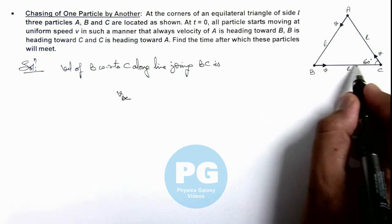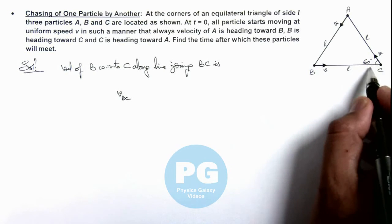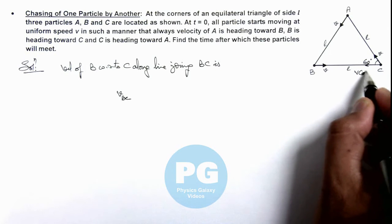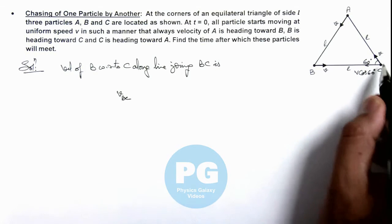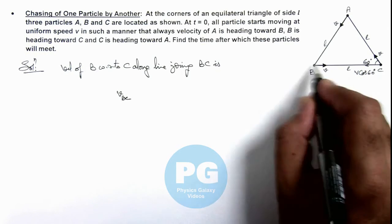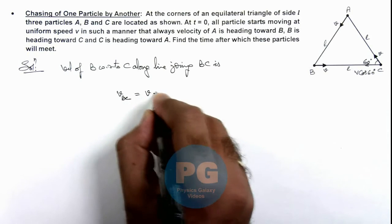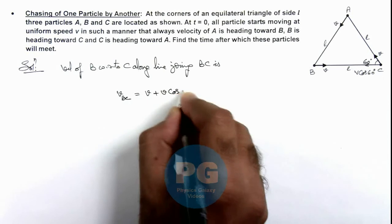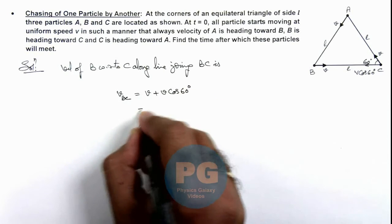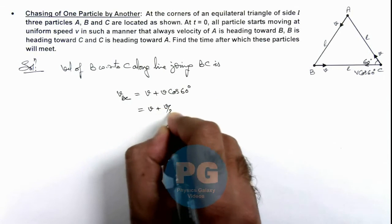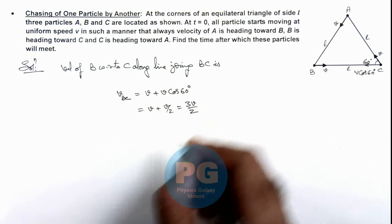C is moving toward B with velocity v cos 60. Here, this velocity component is v cos 60 degree. So if we consider C at rest, then the velocity of B towards C along this line BC will be v plus v cos 60 degree, that is v plus v by 2, that is equal to 3v by 2.